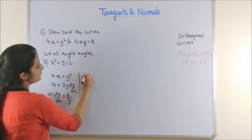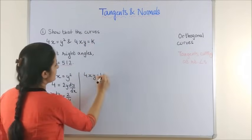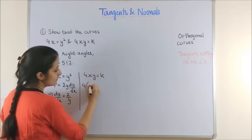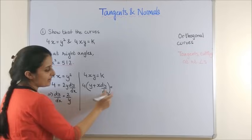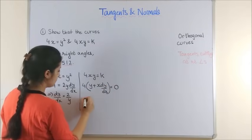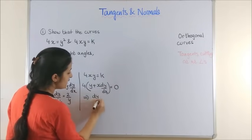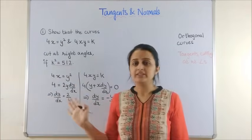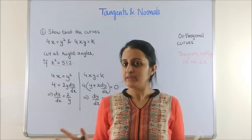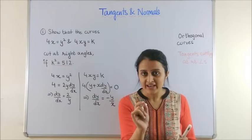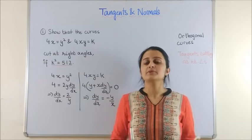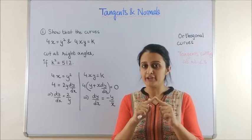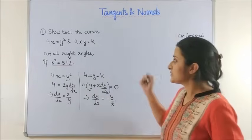Similarly for the other curve 4xy = k, differentiating with respect to x using the product rule gives y + x·(dy/dx) = 0, so dy/dx = −y/x. Please note these derivatives have no meaning until there is a point of contact, which when substituted gives the slope of the tangent. The big question is how we arrive at that point of contact, and it's very simple.